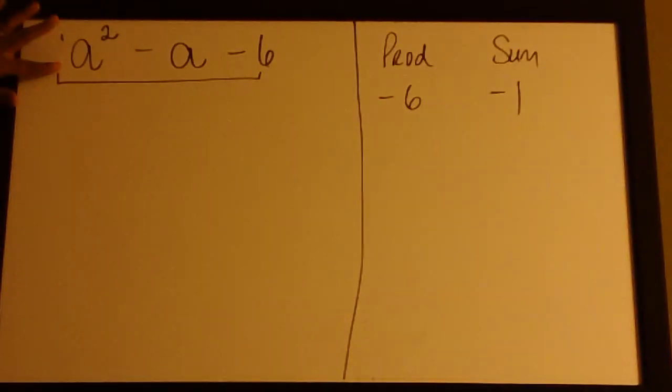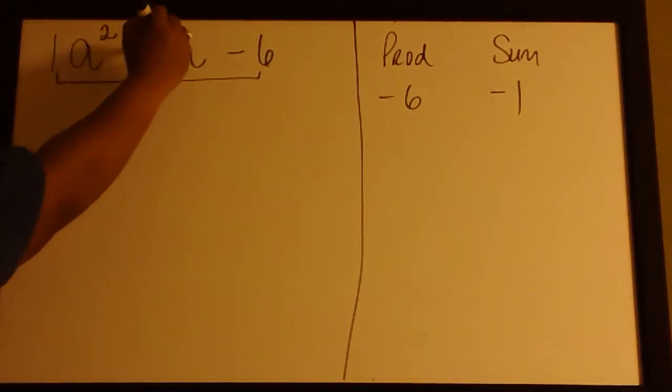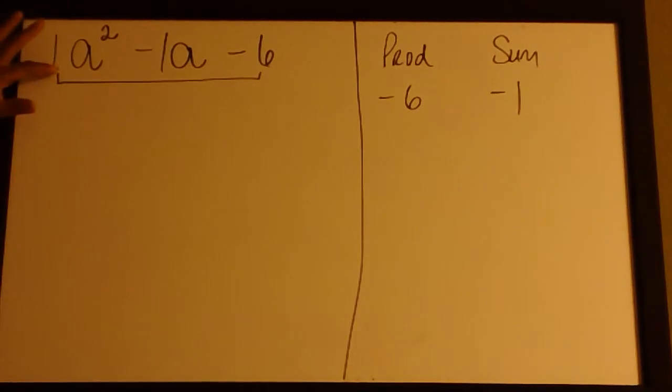If it helps you, you can put a 1 here and a -1 here that way you can see that the middle term is -1 and that's where our sum comes from.